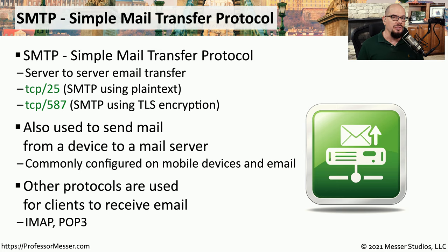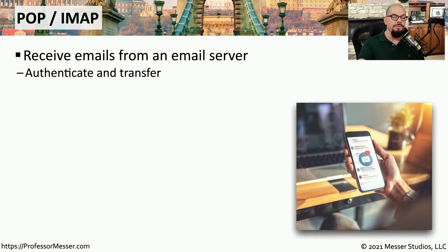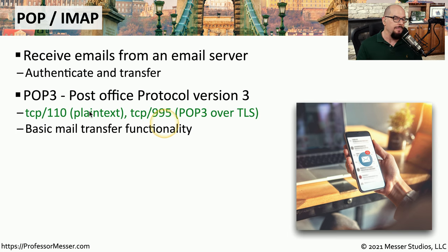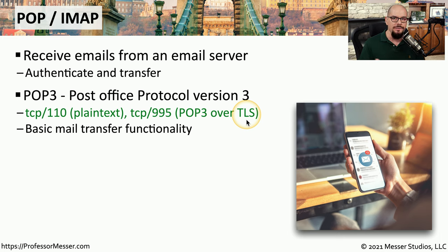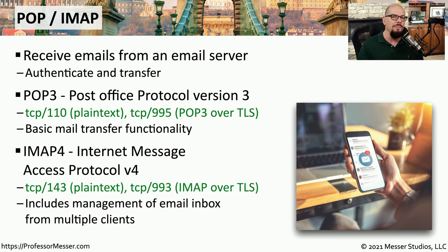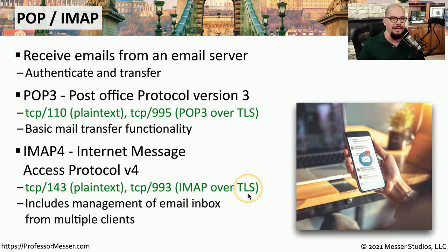For inbound email, you're probably using one of two different protocols: either IMAP or POP3. POP3 stands for Post Office Protocol Version 3. Sending this information in the clear uses TCP port 110, which is why you'll commonly see TCP port 995 used to send POP3 data over the encrypted TLS protocol. IMAP4, the Internet Message Access Protocol Version 4, uses TCP port 143 for plain text and TCP port 993 for IMAP over the encrypted TLS protocol.